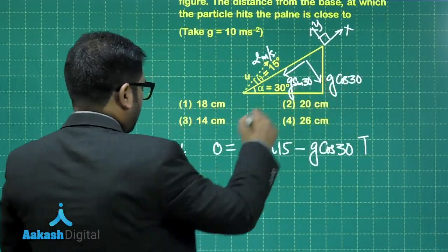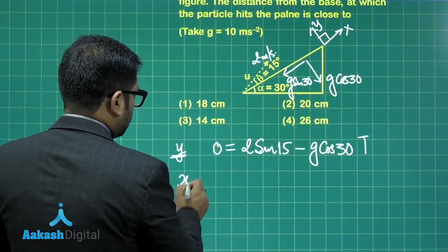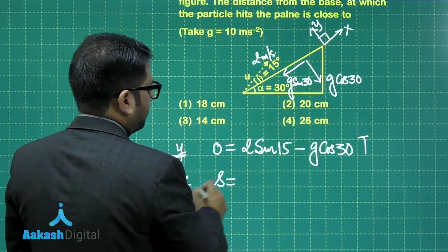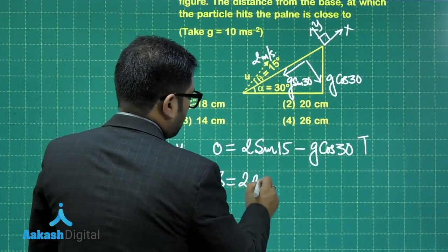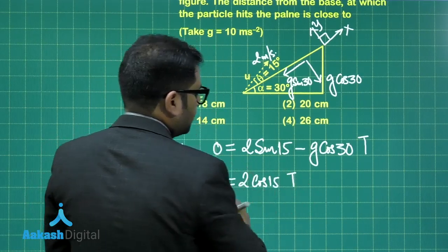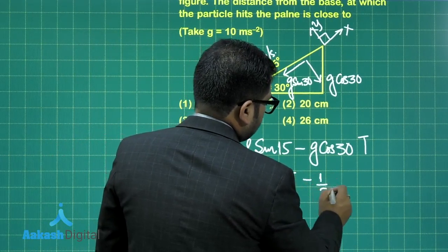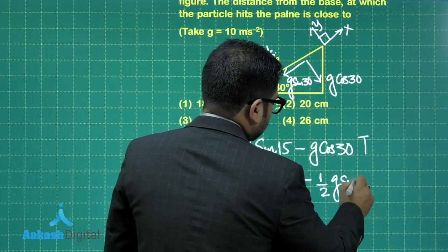The range along the inclined plane, that would be the motion along x. So I would be getting s equals 2 cos 15 multiplied by T, ut plus half at squared. So acceleration will be negative, that's very clear, multiplied by T squared.